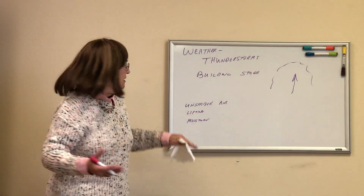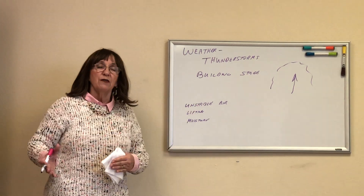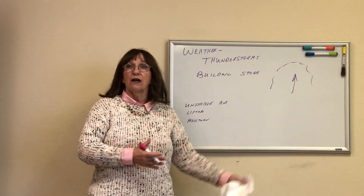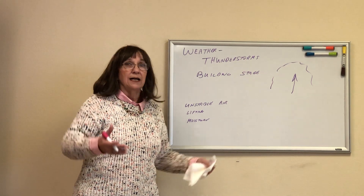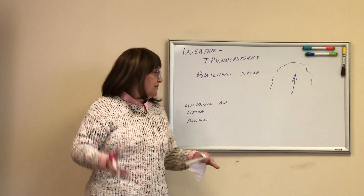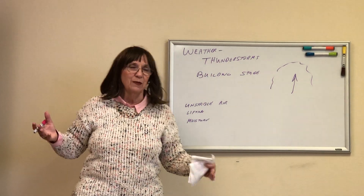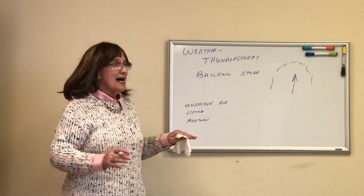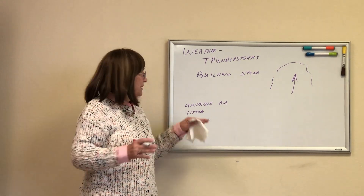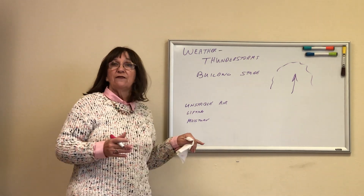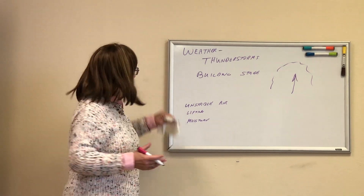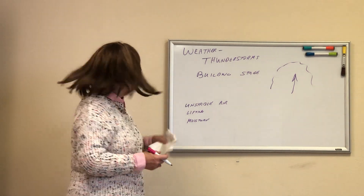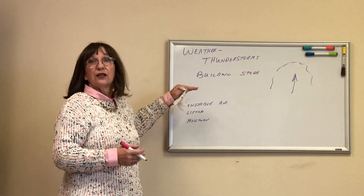What can cause a thunderstorm? Fronts moving through, moving the air upward. Hurricanes doing all kinds of screwy things. Fires creating that lifting action and unstable air — we have pyrocumulus. But these are the elements that we need: unstable air, lifting action, and moisture. If you don't have those three elements you're not going to get a thunderstorm.